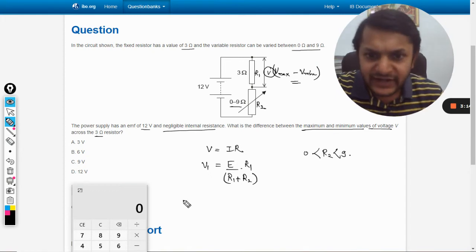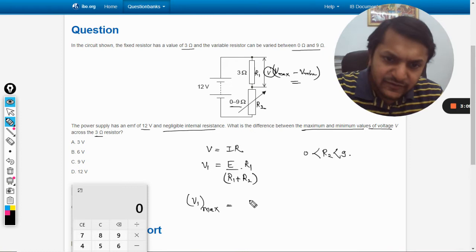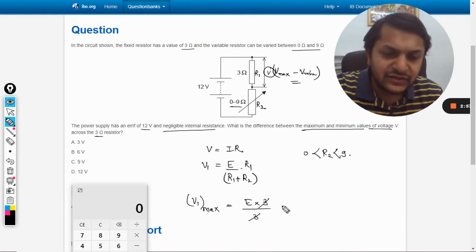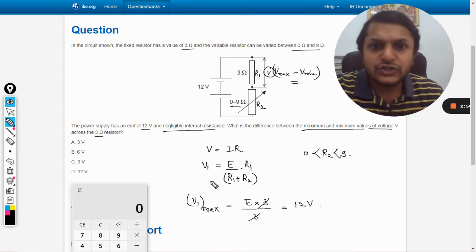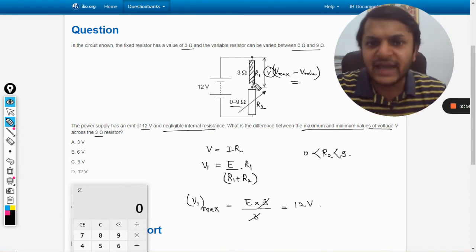V1_max will be equal to E into R1, which is 3, divided by R1 plus R2, and R2 has to be taken to be equal to 0. So this is 3, and 3 cancels, and E will be 12 volts.